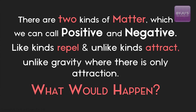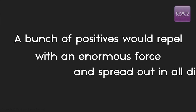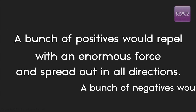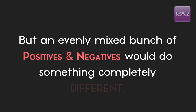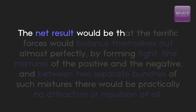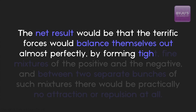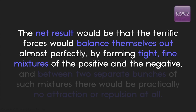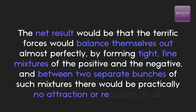What would happen? A bunch of positives would repel with an enormous force and spread out in all directions, and a bunch of negatives would do the same. But an evenly mixed bunch of positives and negatives would do something completely different. The opposite pieces would be pulled together by the enormous attractions. The net result would be that the terrific forces would balance themselves out almost perfectly by forming tight, fine mixtures of positive and negative. And between two separate bunches of such mixtures, there would be practically no attraction or repulsion at all.